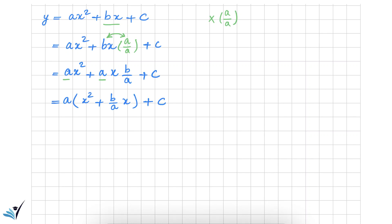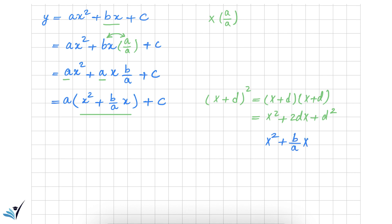Now I want to make the expression inside the parenthesis a perfect square, and to do so there is a term missing. If we revisit the perfect square (X + D)², expanding it using the distributive property gives X² + 2DX + D². Writing my expression underneath: X² + (B over A)·X plus the missing term. Comparing the two, the missing term is half of the X coefficient squared, which is (B over 2A)². Adding this missing term gives the perfect square (X + B over 2A)².